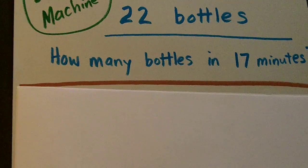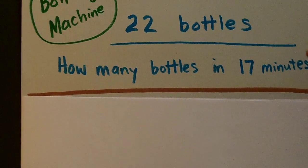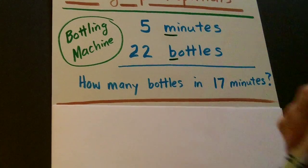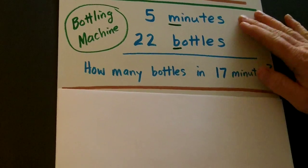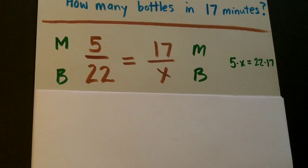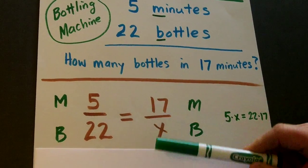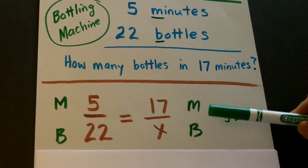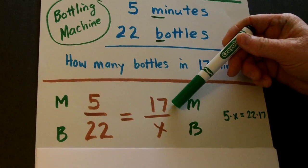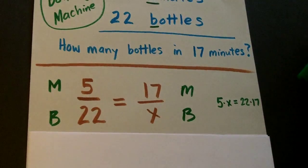Now, what we want to do is to see what the two categories are: minutes and bottles. So we're going to set up things with minutes and bottles. Look how beautiful this is: five minutes produces 22 bottles, how many bottles will be produced in 17 minutes? Notice we have the minutes both on top.